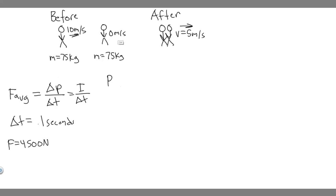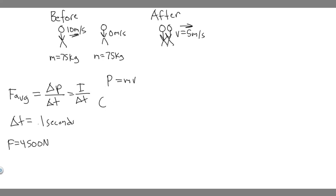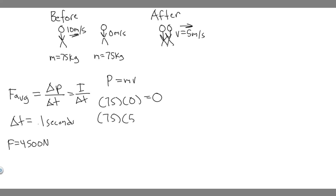We want to find the change in momentum of the second person, because that's the person whose bones we're checking. We know momentum P equals mv. We look at their momentum before and after. The momentum before is 0 — mass is 75 times velocity 0. After, their mass is 75 and they're moving at 5 meters per second, so 75 times 5 equals 375. The change in momentum is final minus initial, so it's 375.